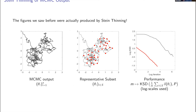That picture I showed before was exactly an application of this algorithm — which we call Stein thinning — to that MCMC output. The red points are chosen automatically by minimizing, in a greedy fashion, the kernel Stein discrepancy between the corresponding empirical measure and the posterior. If we plot the log kernel Stein discrepancy of the thinned output, it is uniformly better than the kernel Stein discrepancy formed by the partial empirical measure corresponding to the raw MCMC output.